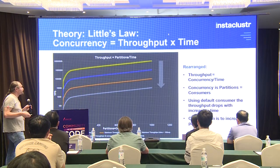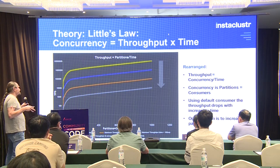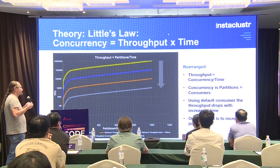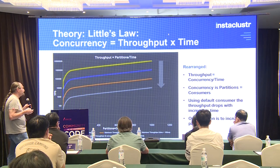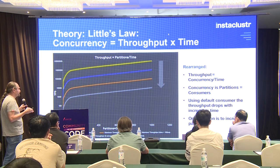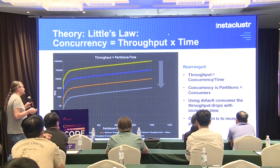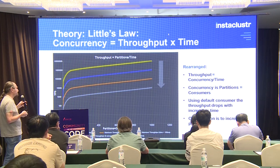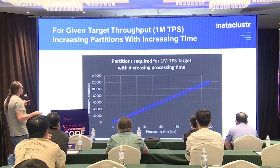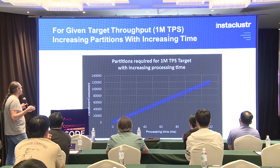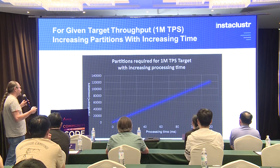A bit of theory: Little's Law may be familiar from performance engineering. It states that the concurrency of a system equals the throughput times the time each item spends in the system, and you can rearrange that to compute throughput as concurrency divided by time. In this system, concurrency is basically the number of partitions, which is also equal to the number of consumers. Using the default consumer, throughput drops with increasing processing time because of the single-threaded nature, and the only solution is to increase the number of partitions. So if you have a target throughput of a million transactions per second, you have to increase total partitions with increasing latency.